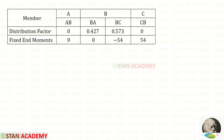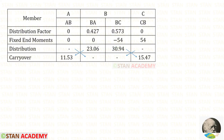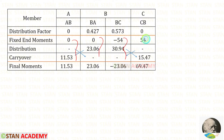Now let us start making the moment distribution table. First let us enter all of the members, then the distribution factors, then the fixed end moments. For the member BC, M of BC is minus 54 and M of CB is plus 54. Now let us do the first distribution at joint B. We add the two values and multiply with the distribution factors. We get negative values, so we enter them as positive. Then we do the carry over by dividing these values by 2 and entering the answers. Since joint B has no remaining unbalanced value, we cannot proceed further. Let us add the values and find the final moments.